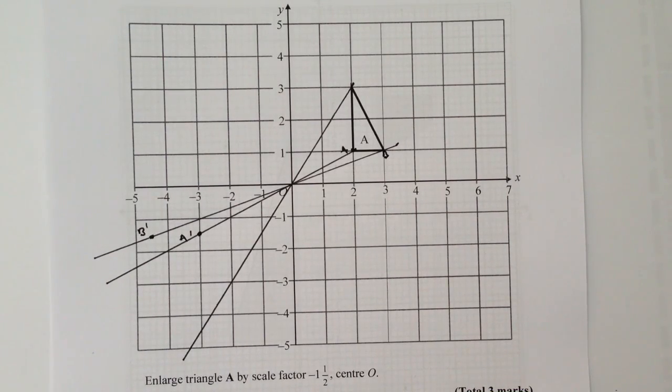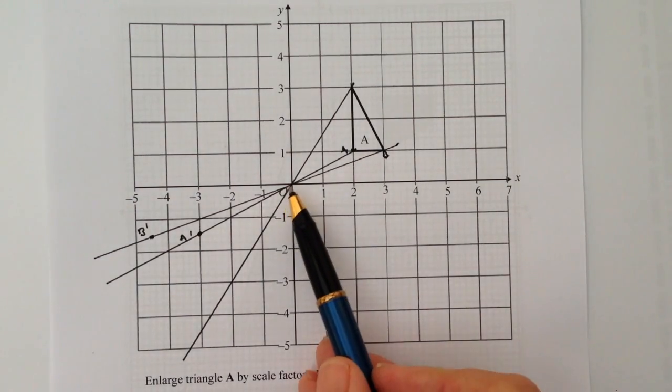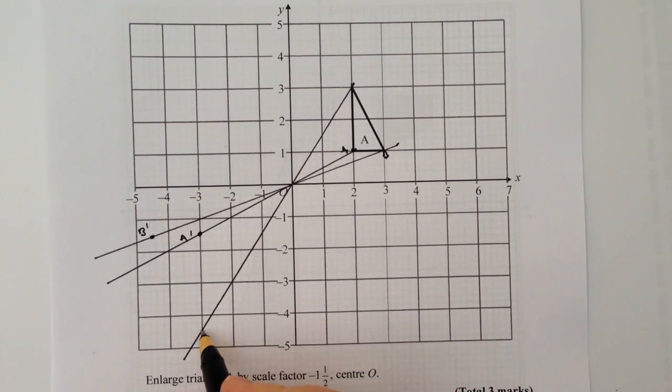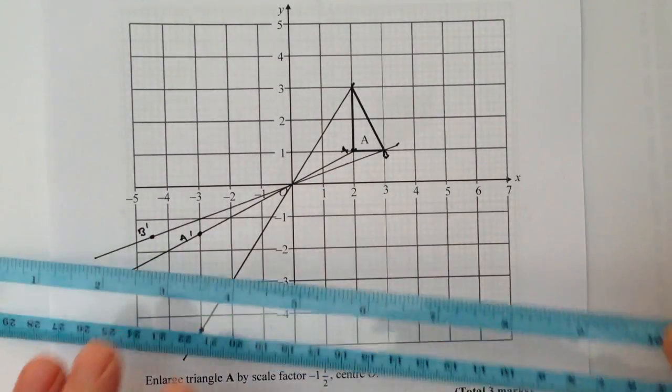And then I'm going to go up three, well that times one and a half is four and a half. So I'm going to go along three and then I'm going to go down to four and a half. And what you'll see is that the points themselves are on the lines of enlargement.